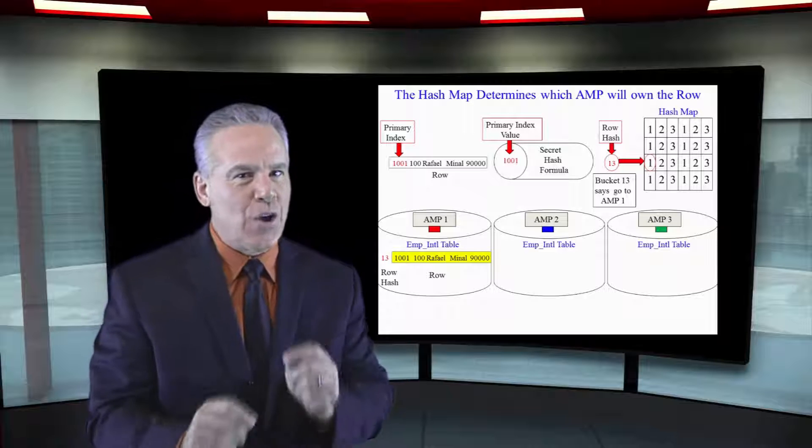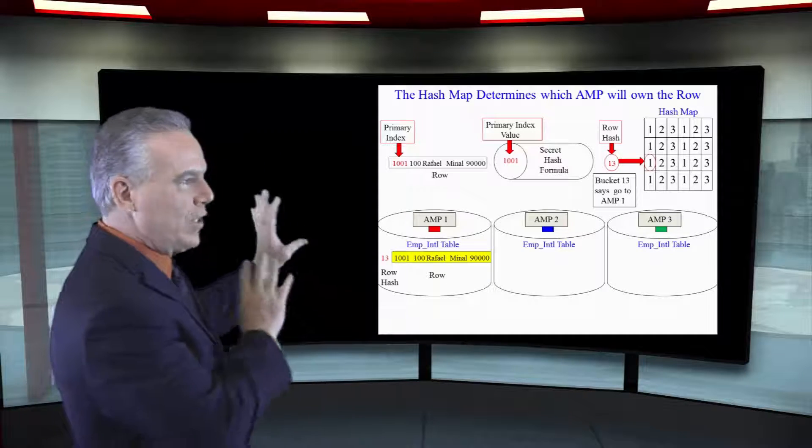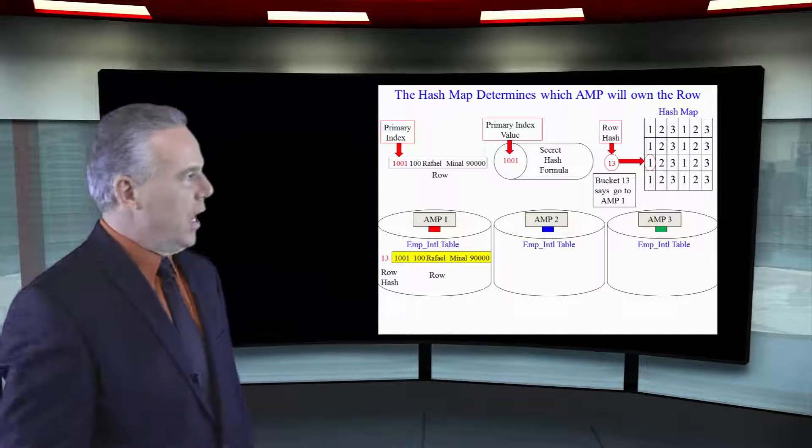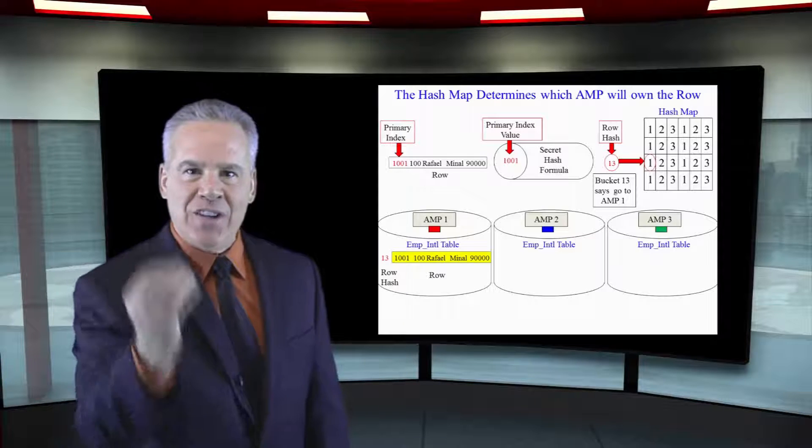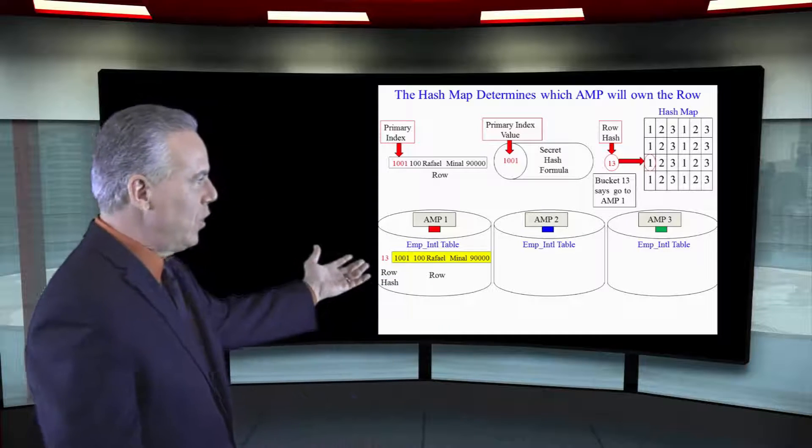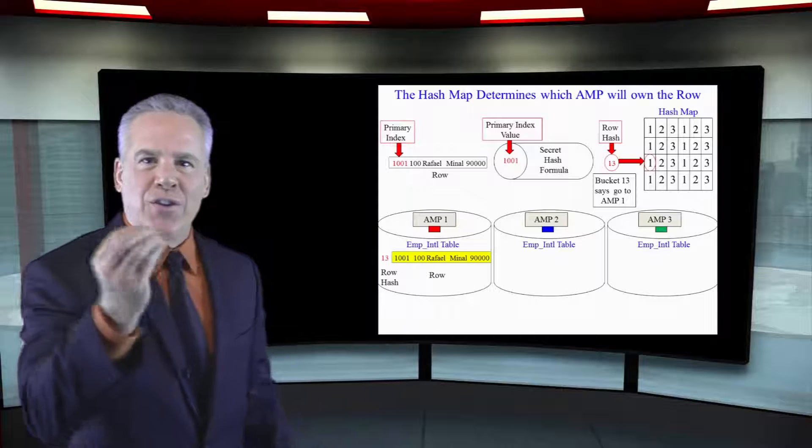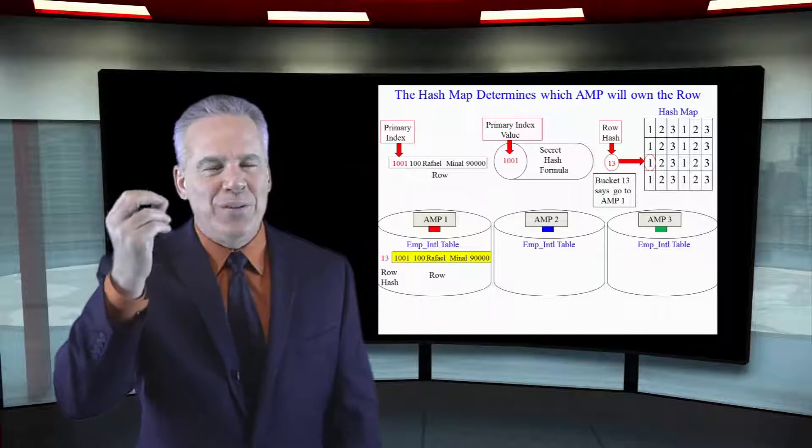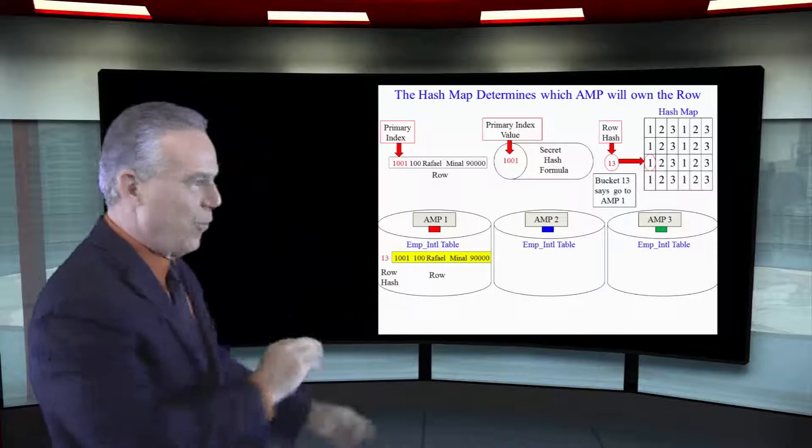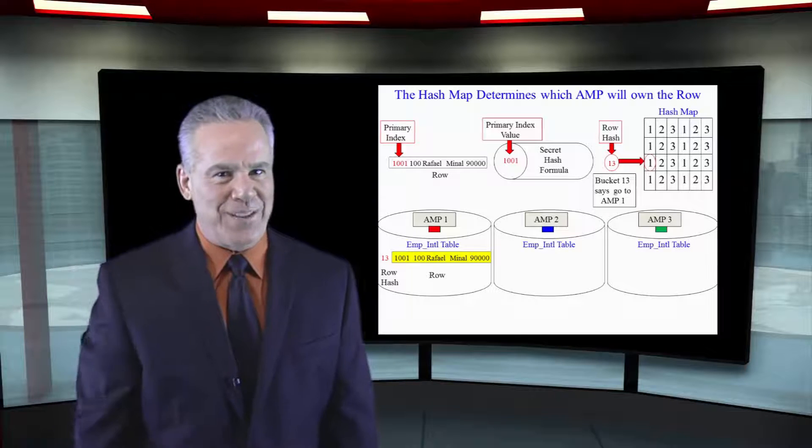Now let's look at it again in slow motion. What is the primary index of this row? It's employee number. Let's hash it. What's the value? 1001, row hash 13. If we went through this process a million times and hashed 1001, it'd always come up with a 13.